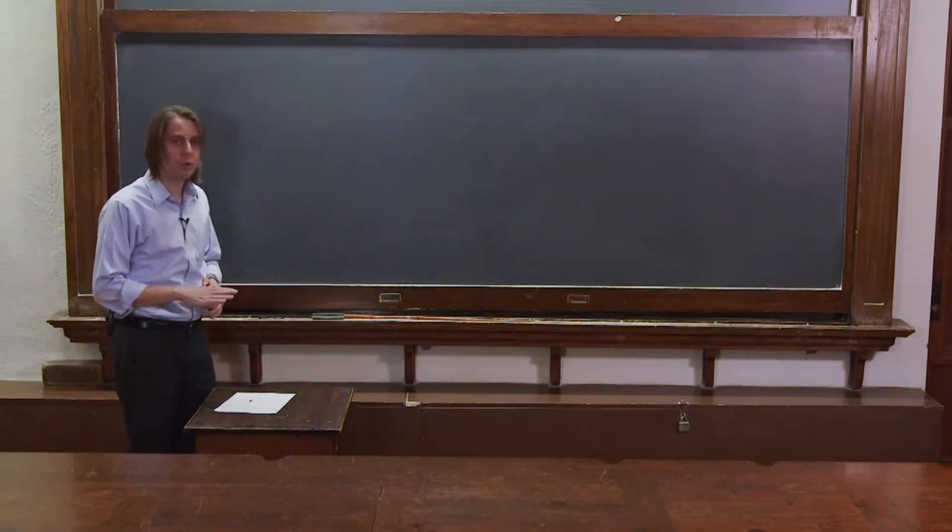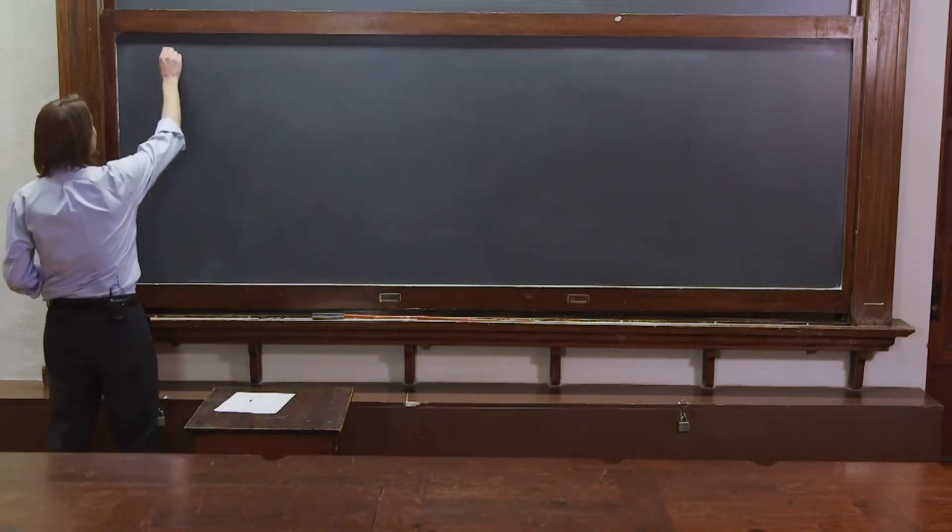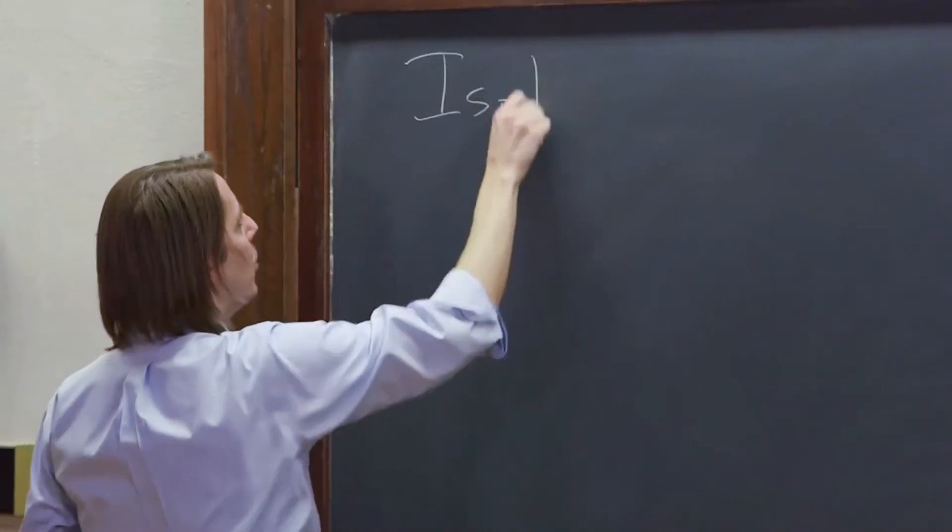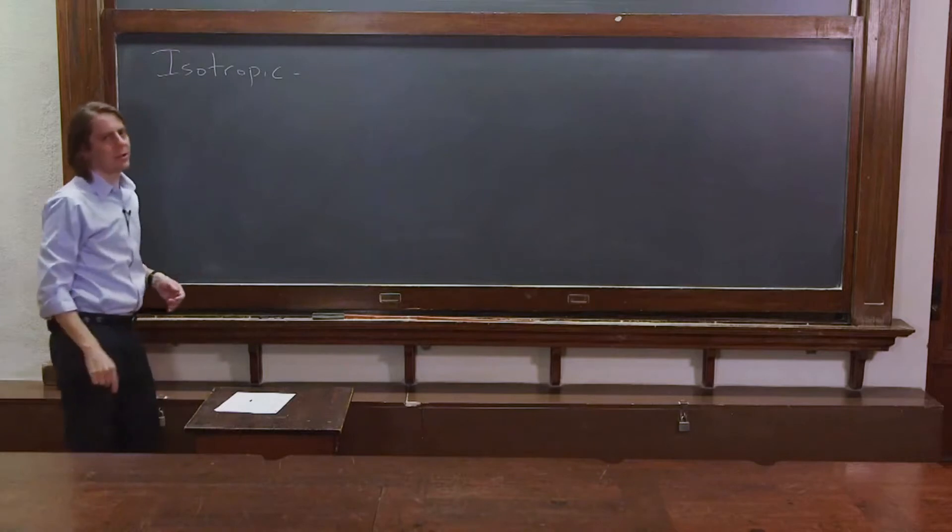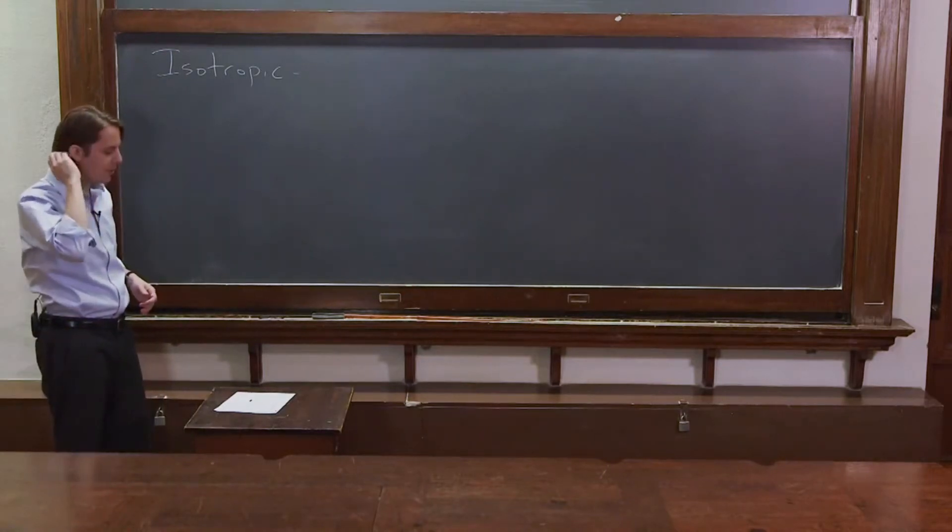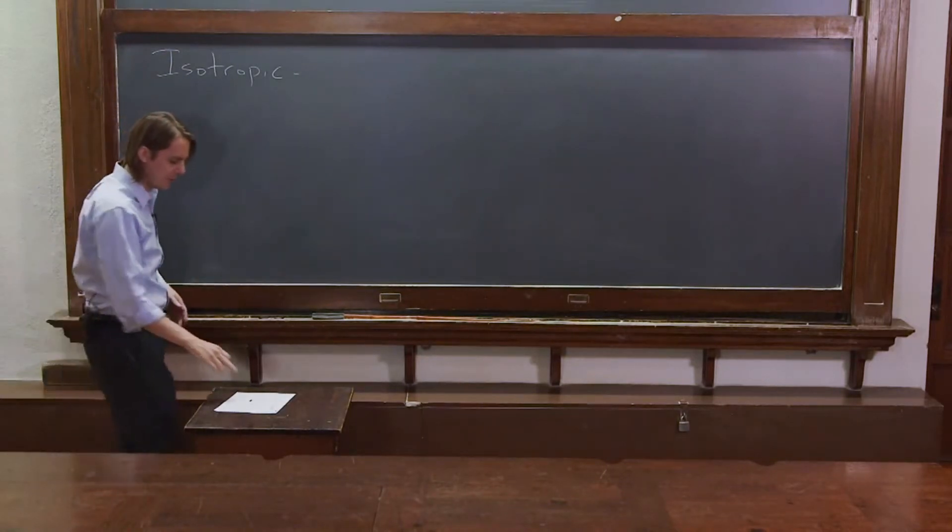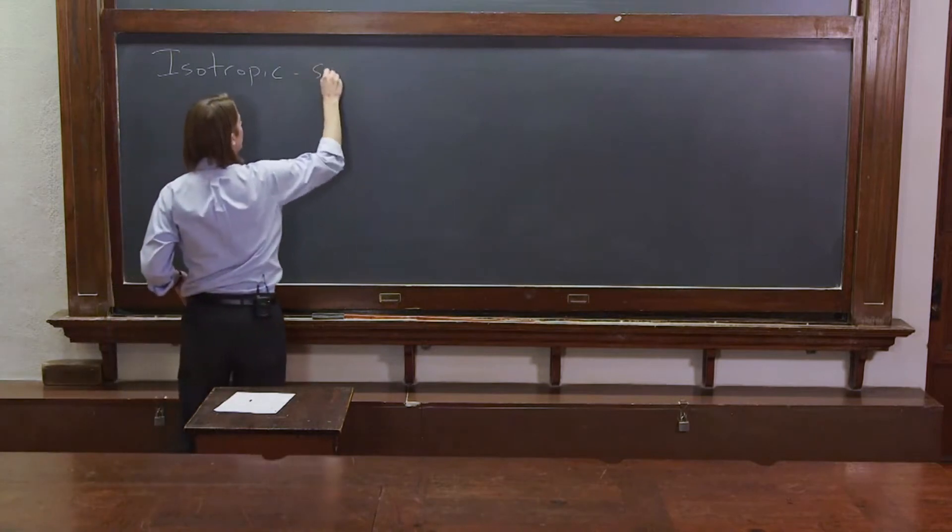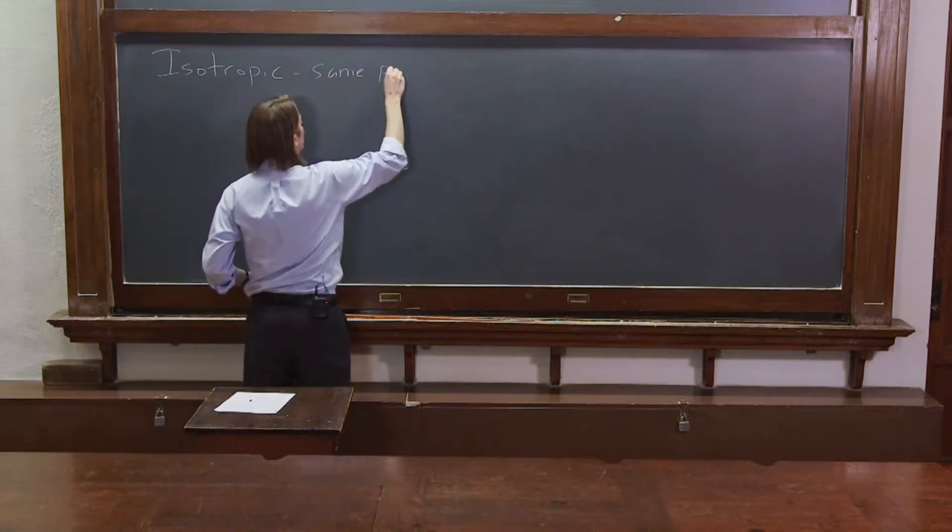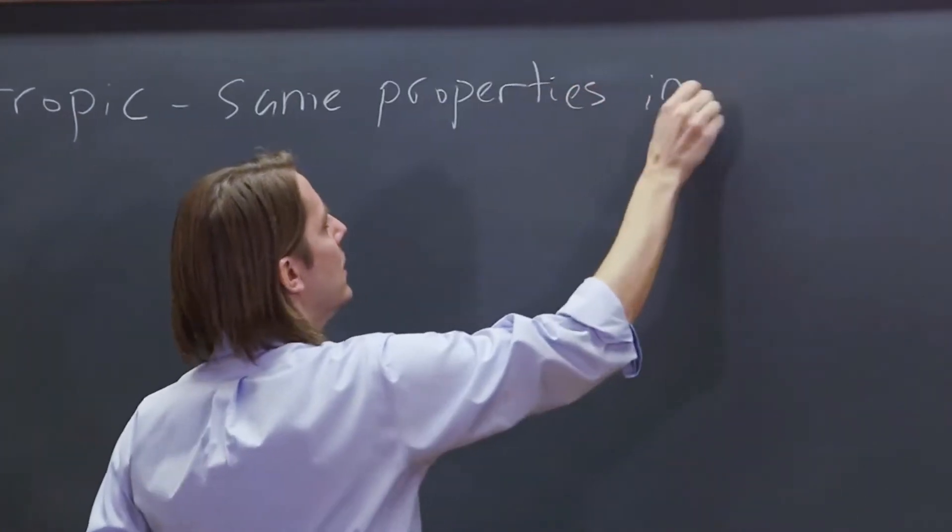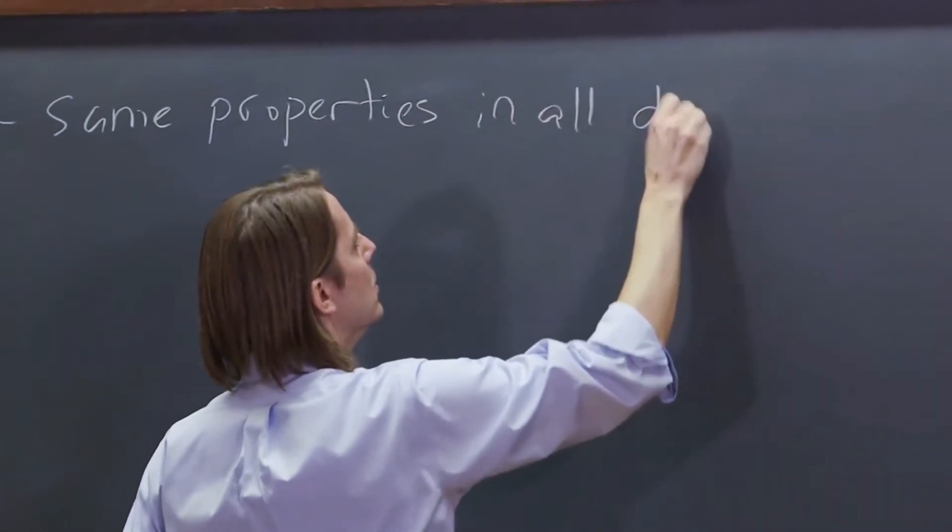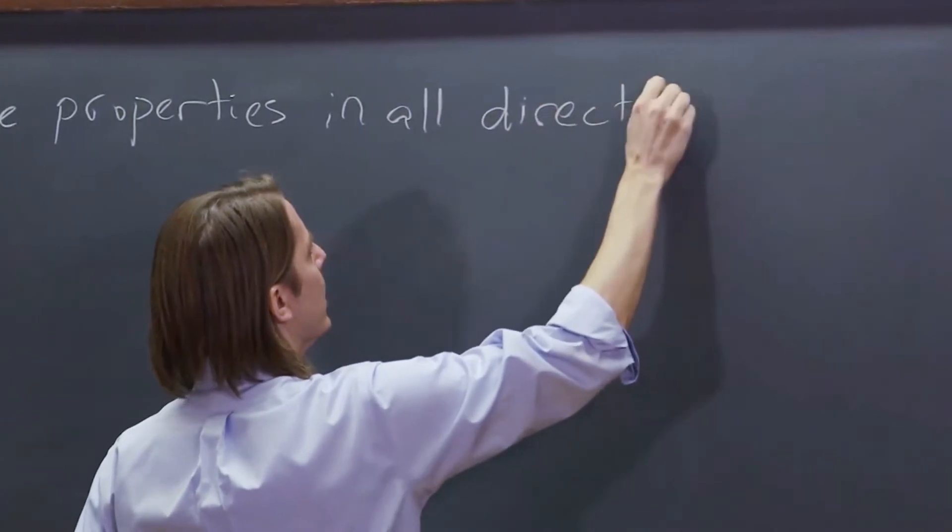So it all comes down to one word. Let's define the one word, and the one word is isotropic. In physics, isotropic means, here's my simple definition, same properties in all directions.